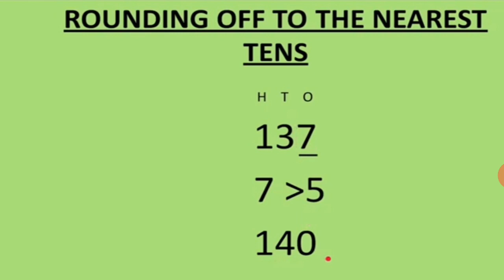Now 7 is greater than 5. So if the number is greater than 5, then we will add 1 to the place on which we have to do the round off — that is the tens place. The number to the right of the tens place will become 0, and the number to the left will remain the same.